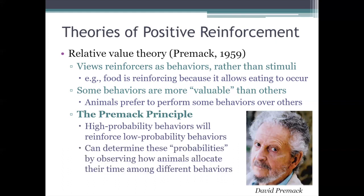If you want to find out whether one behavior will reinforce another, then according to Premack, you should first just observe the animal for a while — see what it chooses to do, see how it chooses to spend its time when it can do so freely. Then make a rank-ordered list from the most frequent behavior to the least frequent. Once you've done that, you can refer to that list to know what you can and can't use to reinforce a certain behavior.